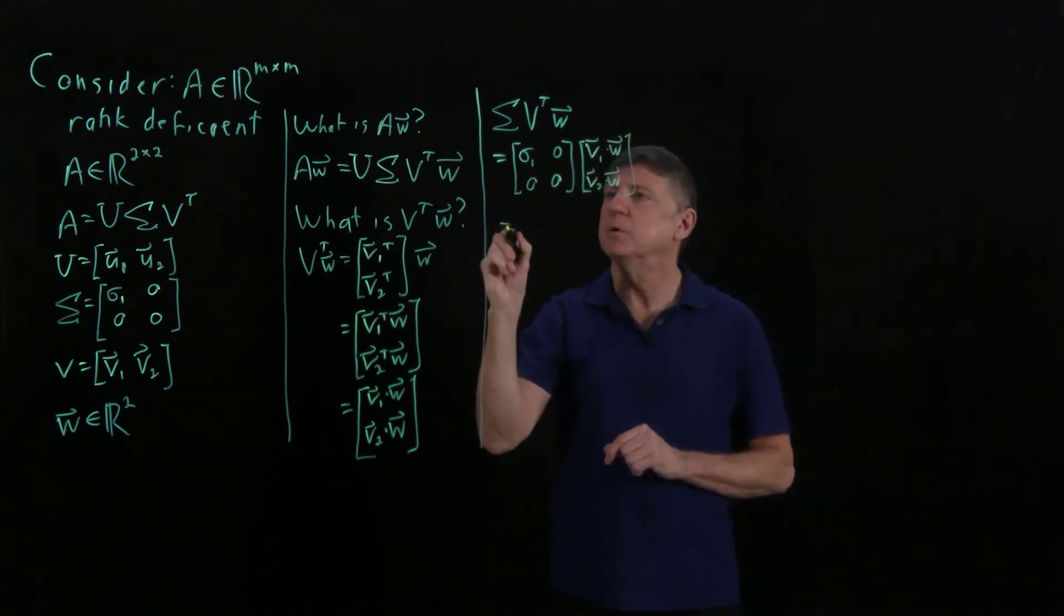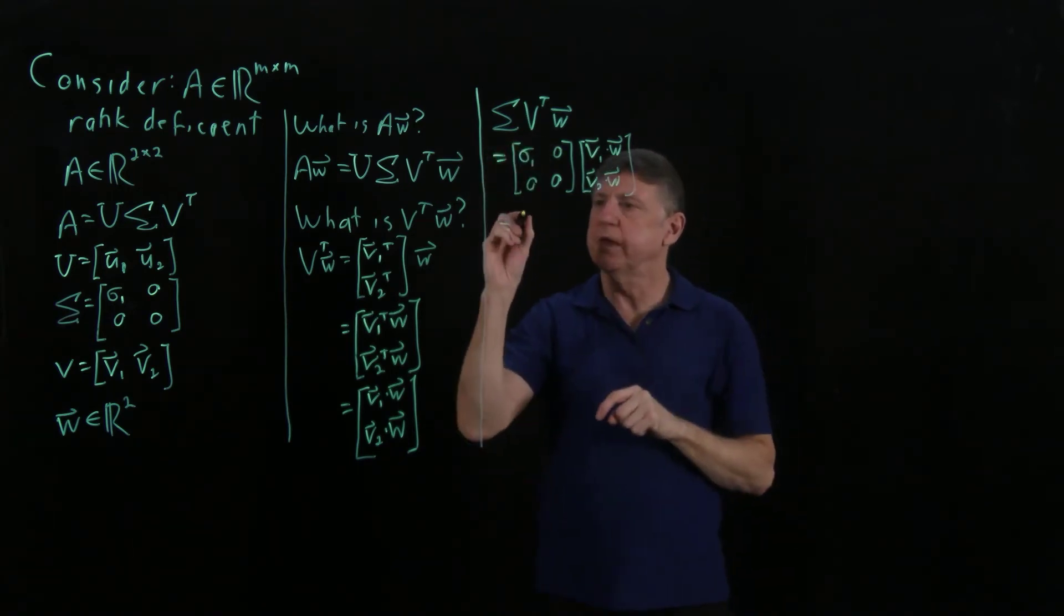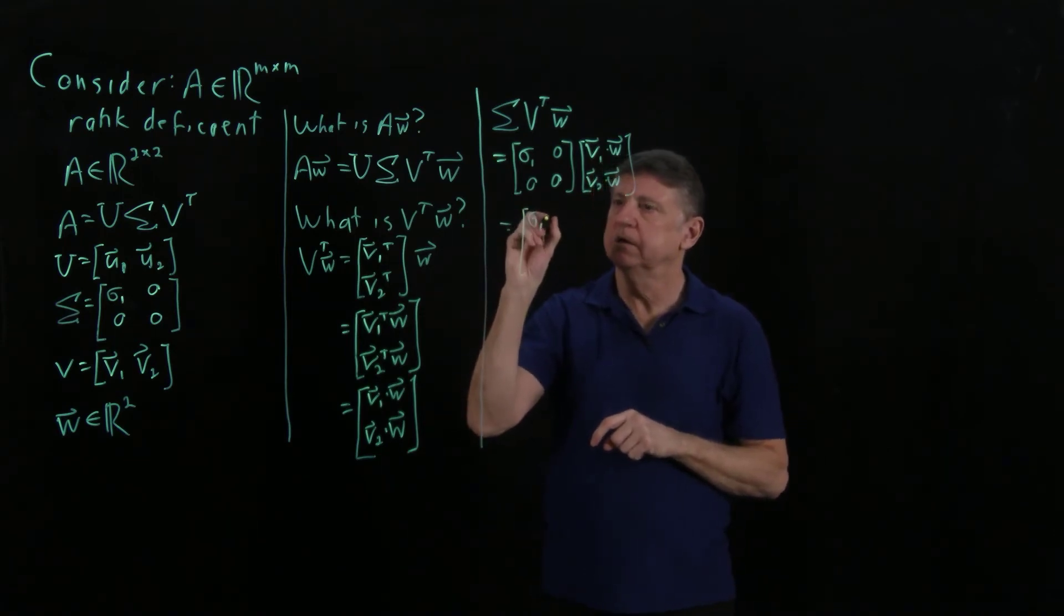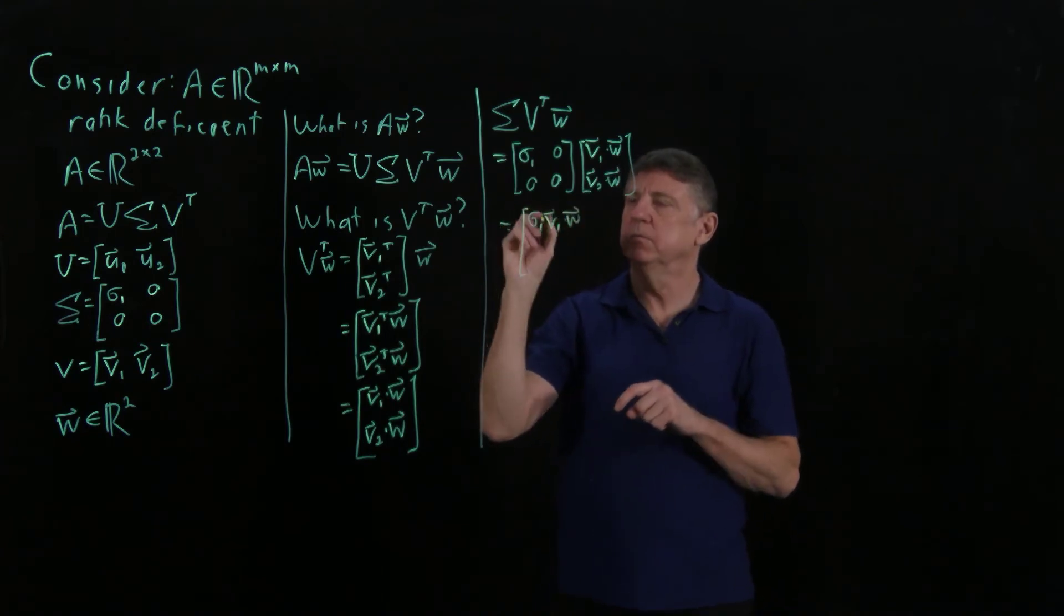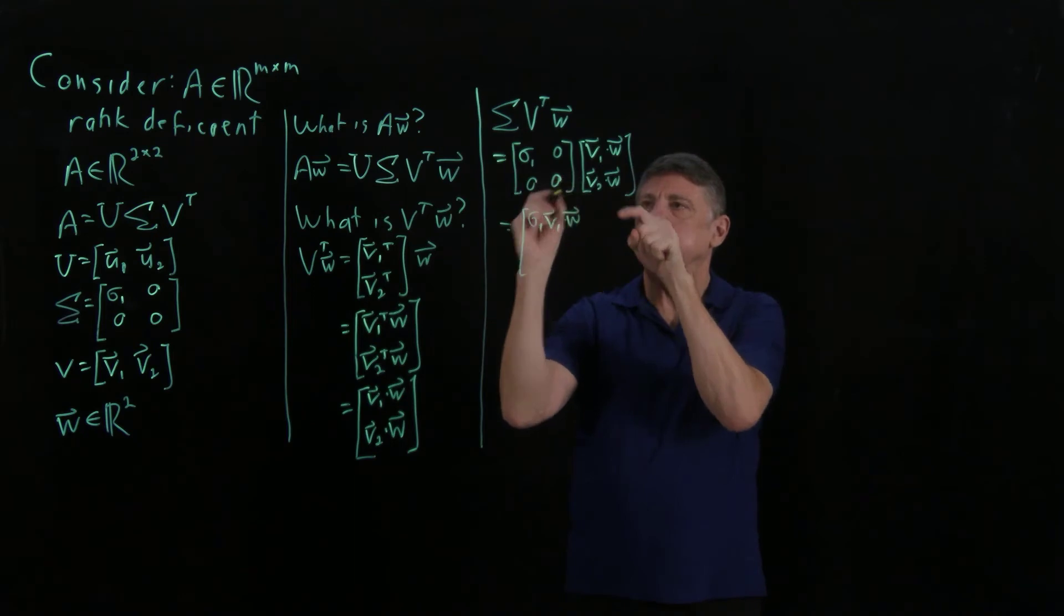And that will equal, so that will be sigma 1, 0, so that will be sigma 1 times V1 dot W. And then this entry will be 0.